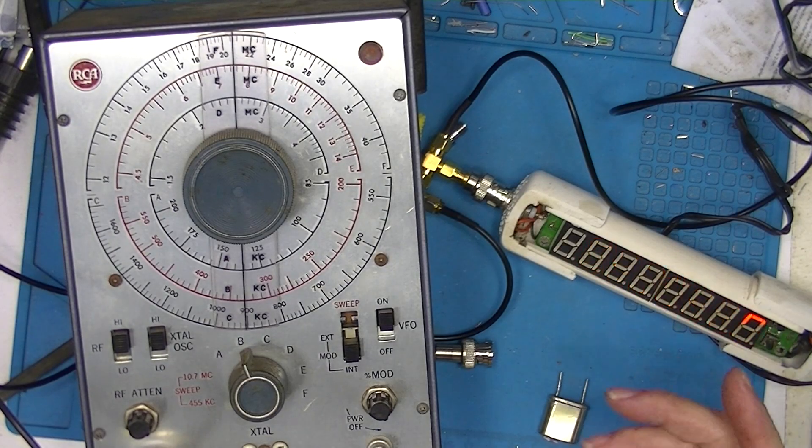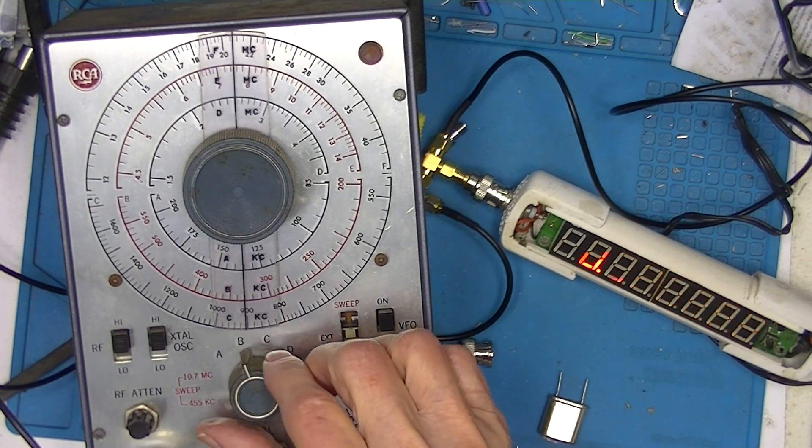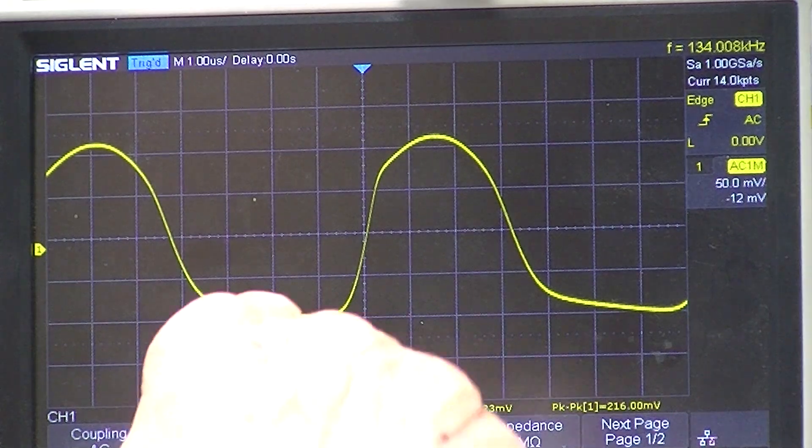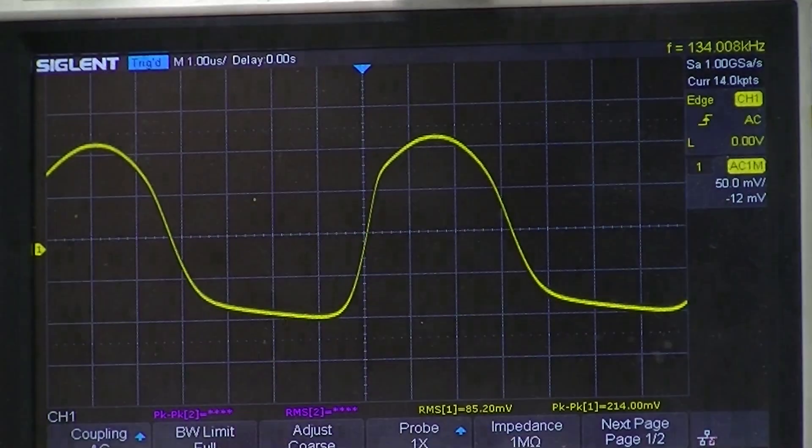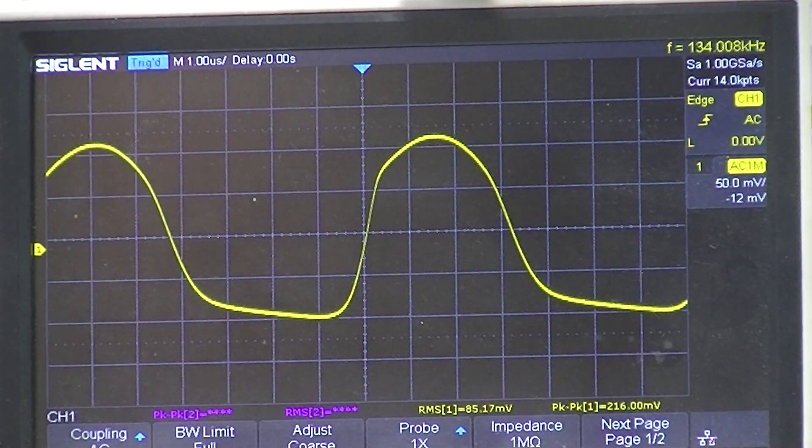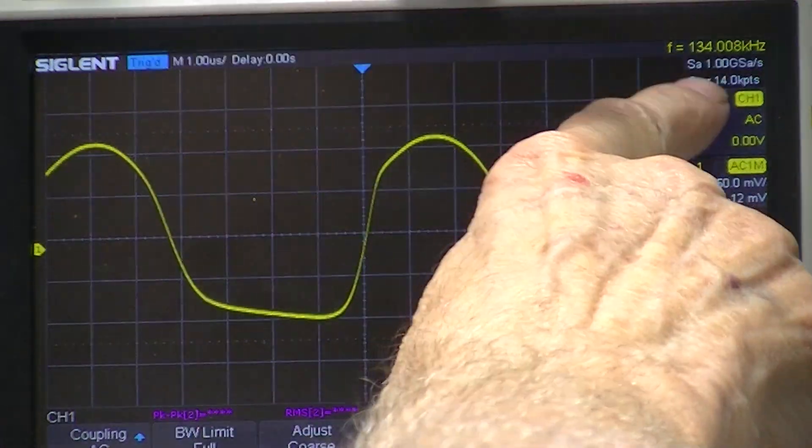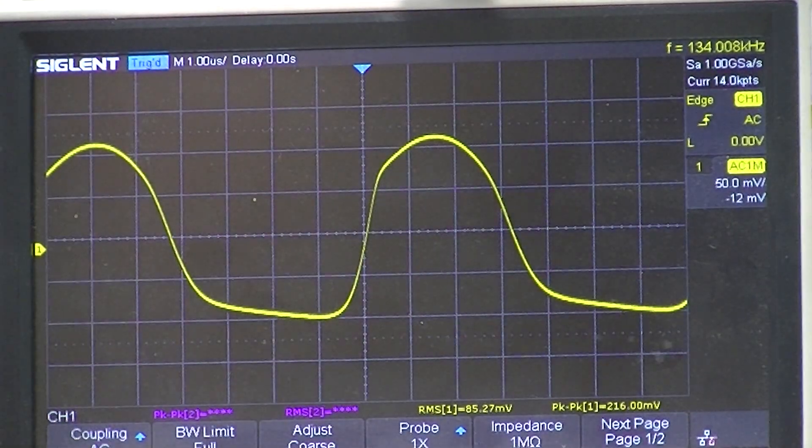And now we'll go down to A which is going to be impossible to read. We've picked up some output on the oscilloscope. We're down to 134 on the frequency meter as well as the oscilloscope, and we're too low for the spectrum analyzer to be effective.